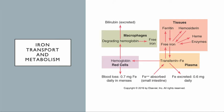It turns out that we can't possibly absorb enough iron in our diets to keep all of our red blood cells in motion. A significant amount of the iron that we use to make new red blood cells is recycled from RBCs that get disposed of. Red blood cells live for 120 days or so. When they are taken out of circulation, they're broken down and their constituent parts then get used.